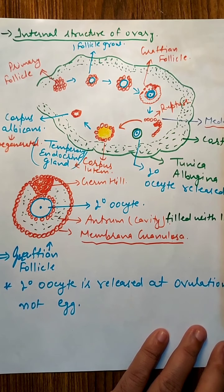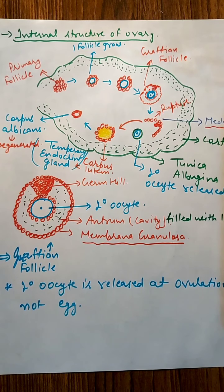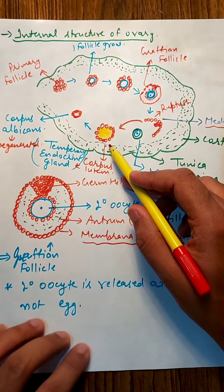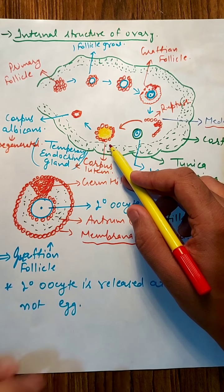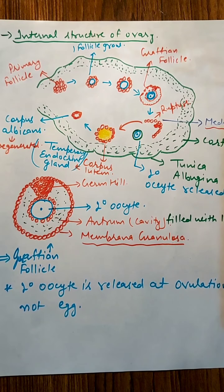After the Graafian follicle ruptures, there is a breakdown of blood vessels. This Graafian follicle will then convert into the corpus luteum. The corpus luteum will act as a temporary endocrine gland, which will release progesterone. That progesterone will help in the development of the endometrium wall for the attachment of the zygote.